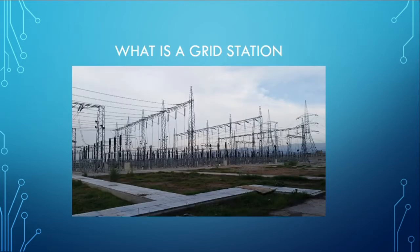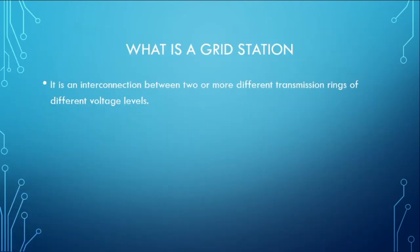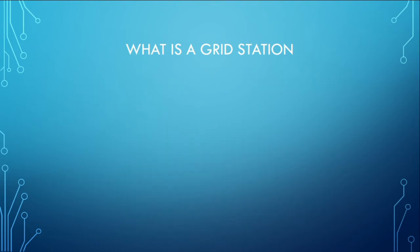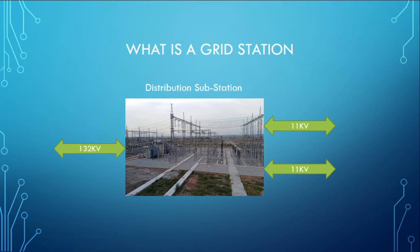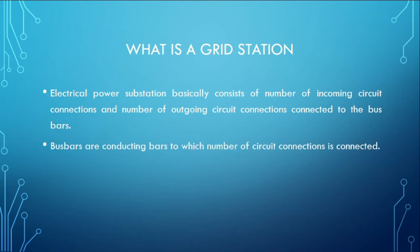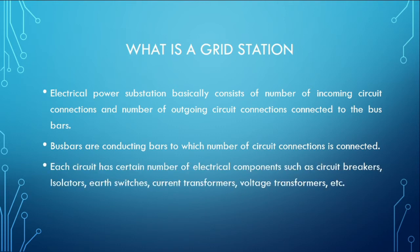What is a grid station? It is an interconnection between two or more different transmission rings of different voltage levels. Our transmission substation has a very high voltage transmission line entering the grid station and two high voltage transmission lines leaving it. The bi-directional arrows show that power can flow in either direction depending upon the situation. An electrical power substation basically consists of a number of incoming and outgoing circuit connections connected to bus bars — conductive bars to which different circuit connections are made. Each circuit has certain electrical components such as circuit breakers, isolators, earth switches, current transformers, and voltage transformers.